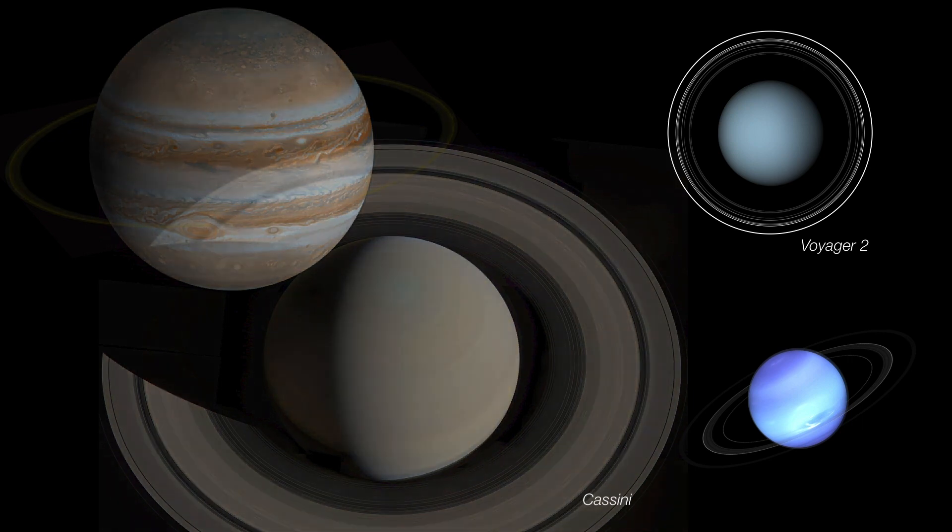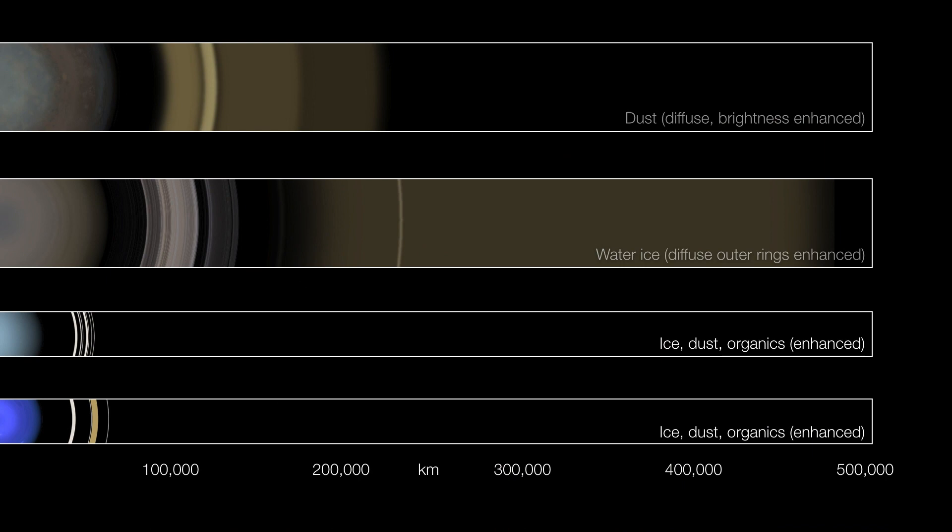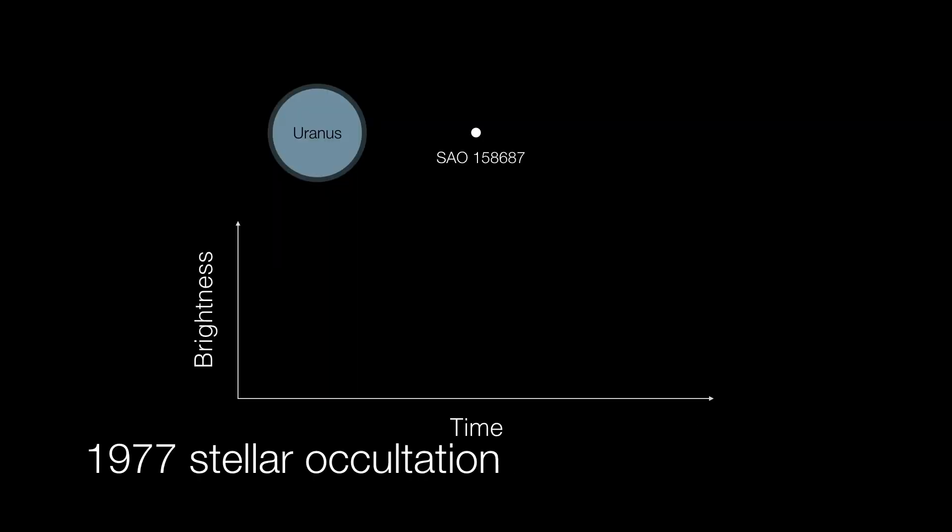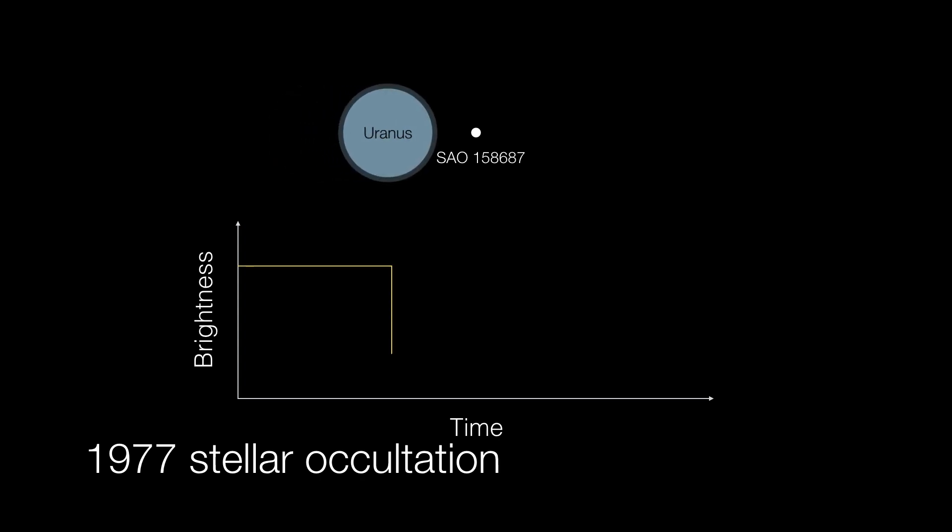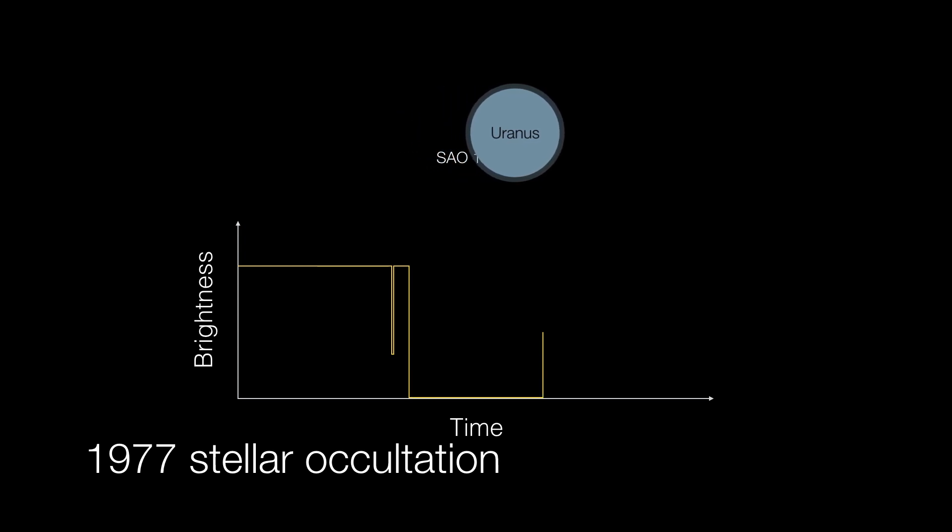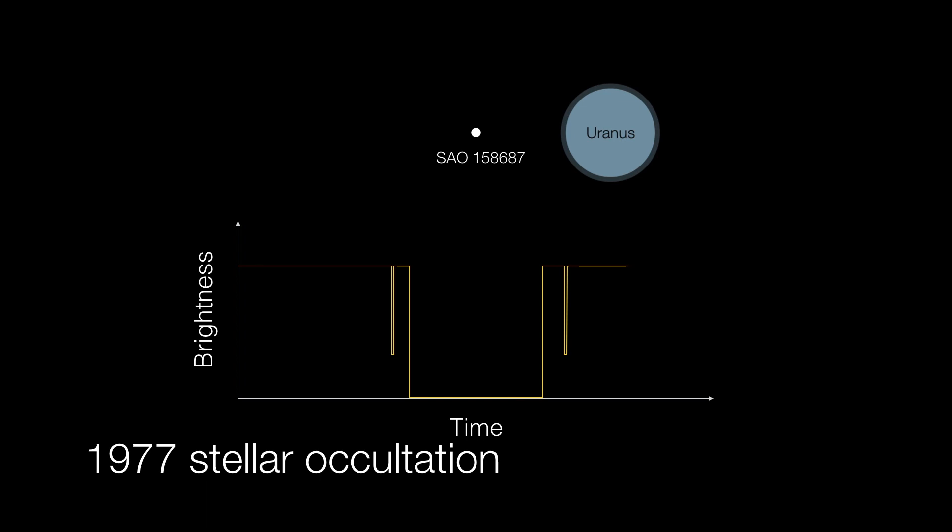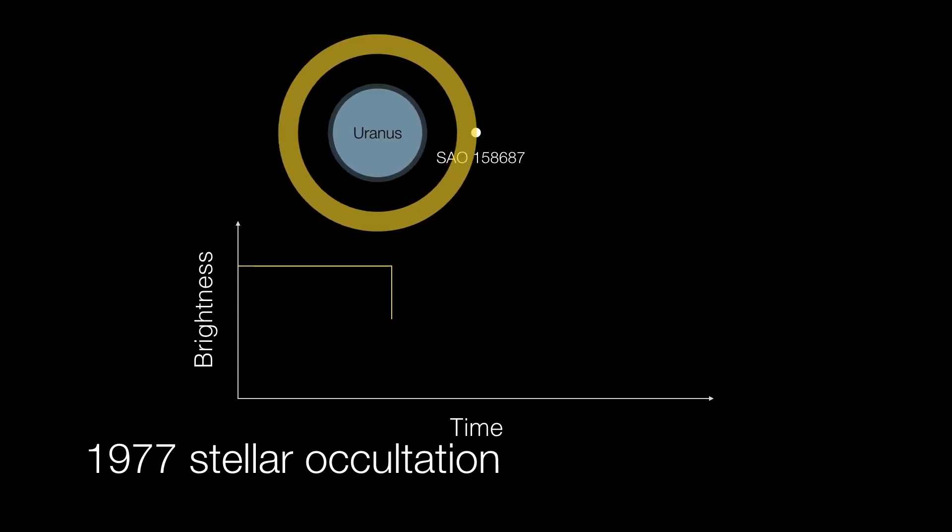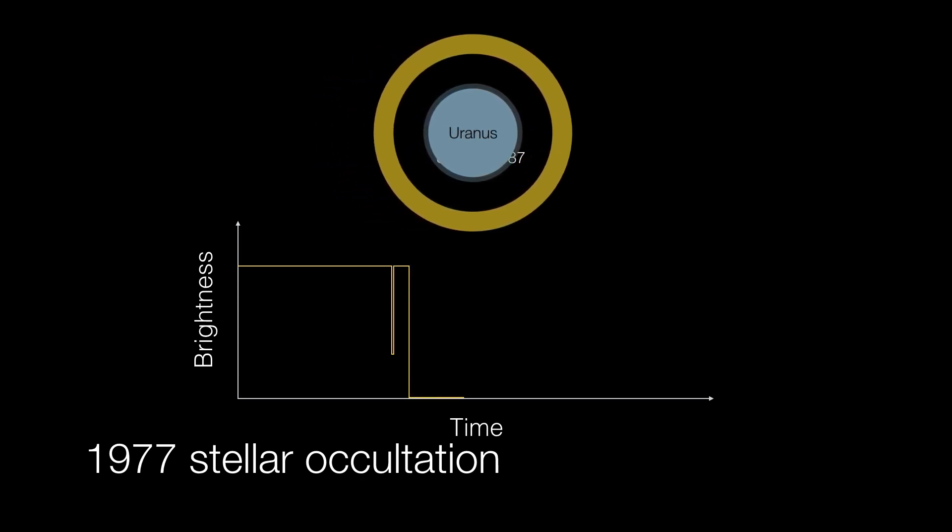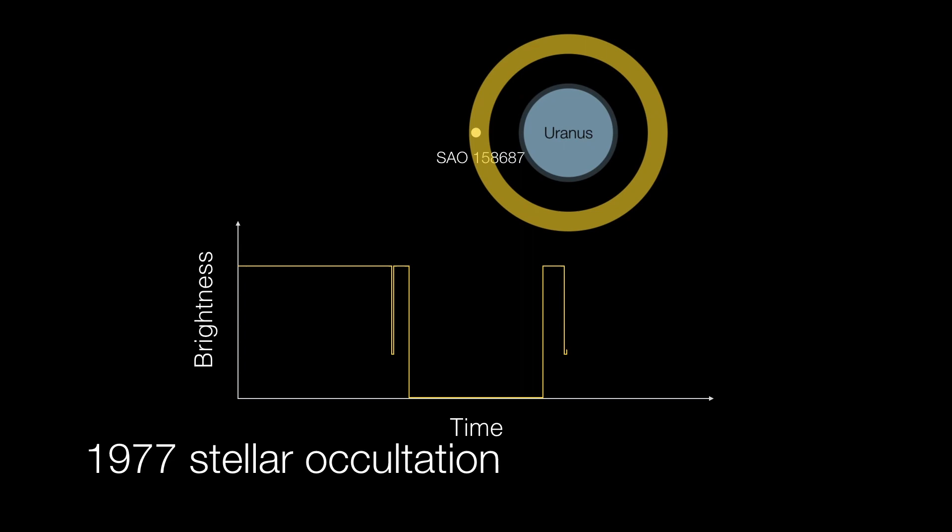Uranus and Neptune have ring systems as well and they're mainly composed of organics or rather dark carbon based materials so they're really difficult to see. In fact Uranus's rings were also discovered by accident by a team of astronomers in 1977. They were waiting for Uranus to pass in front of a star but as the planet was approaching the star there was a brief drop-off in starlight. Then the planet eclipsed the star and then there was another drop-off in starlight. And the astronomers quickly understood that these leading and trailing drop-offs would be best explained by rings. Five rings in fact producing these pre- and post-eclipse drop-offs.